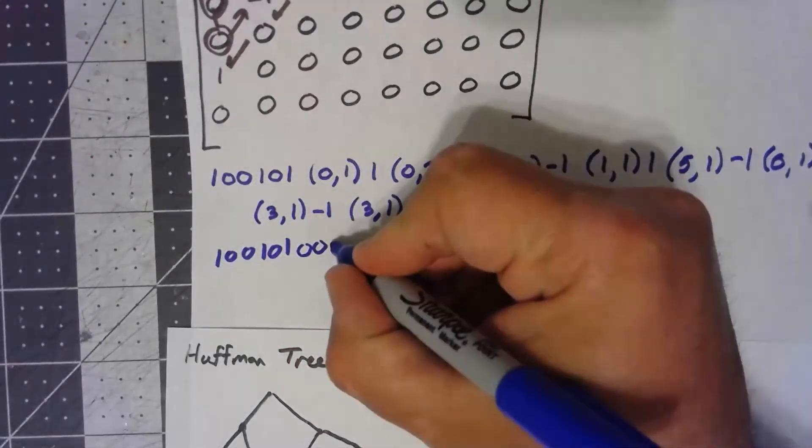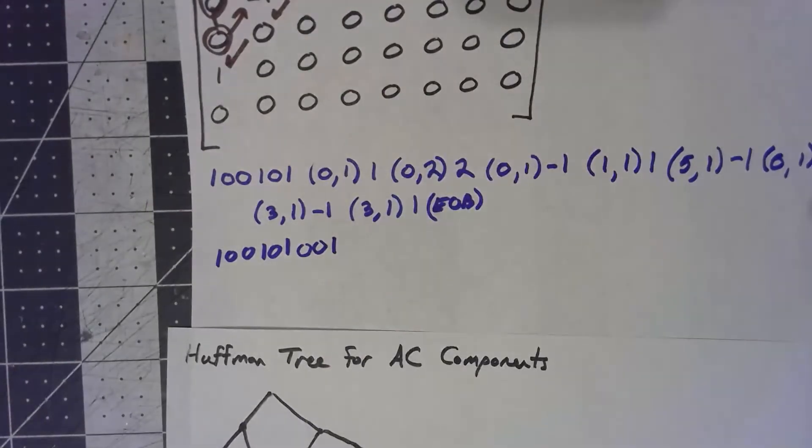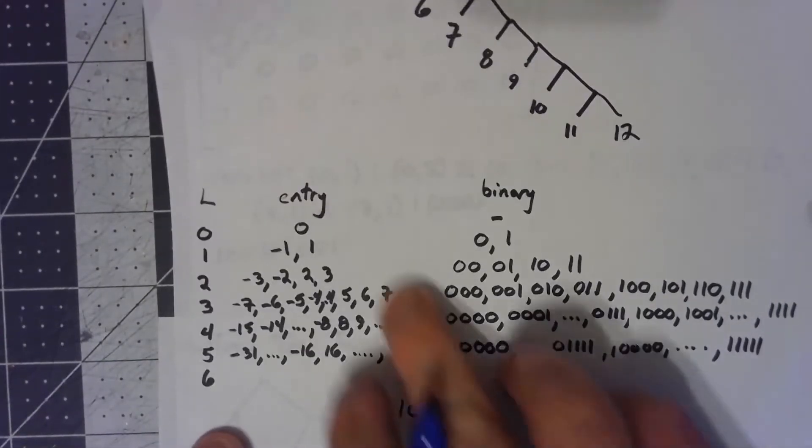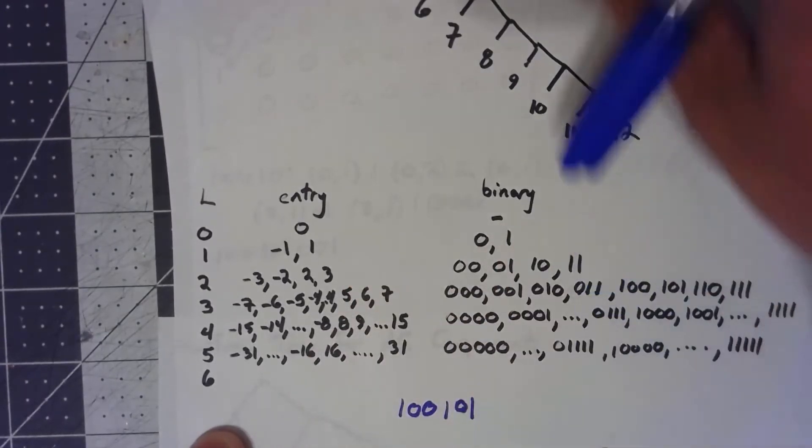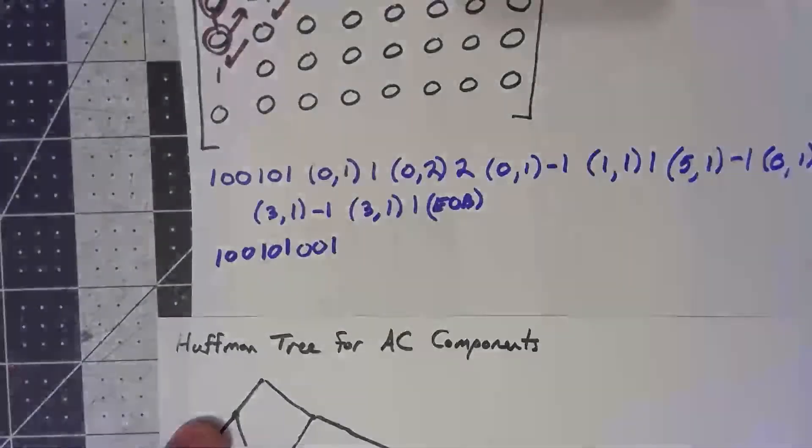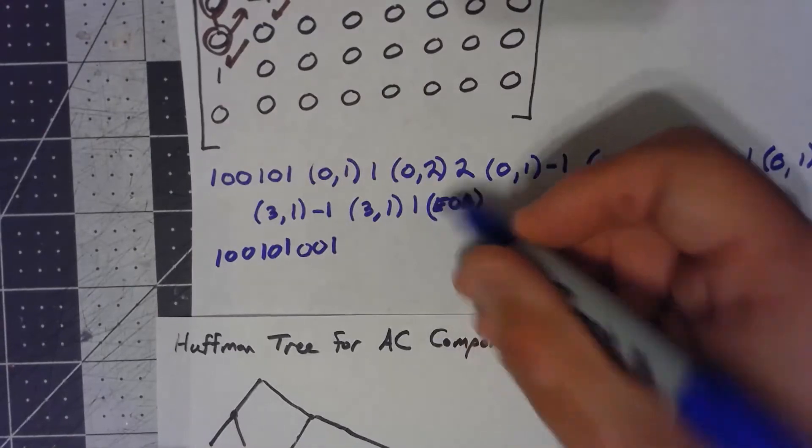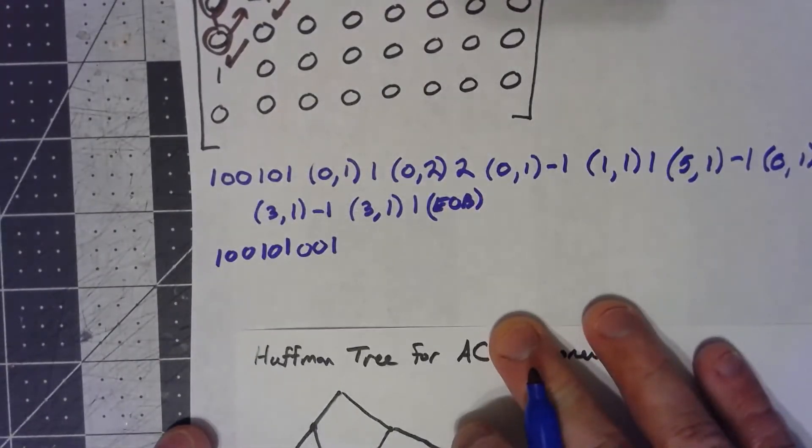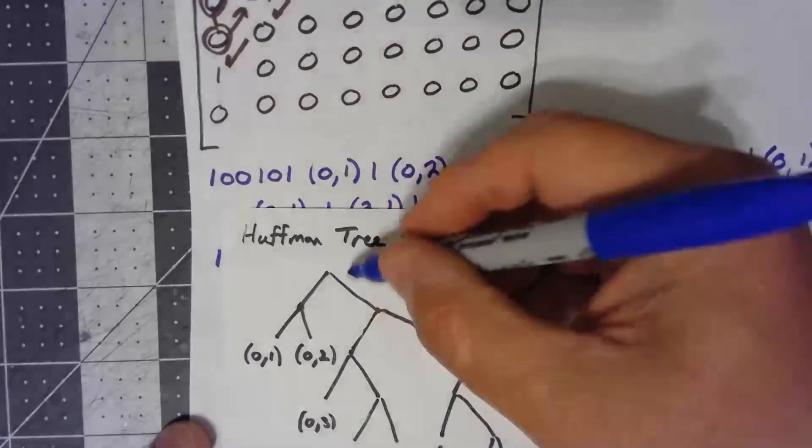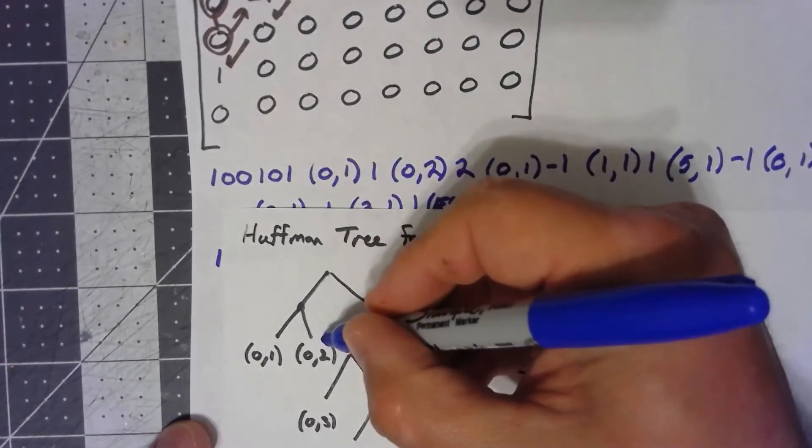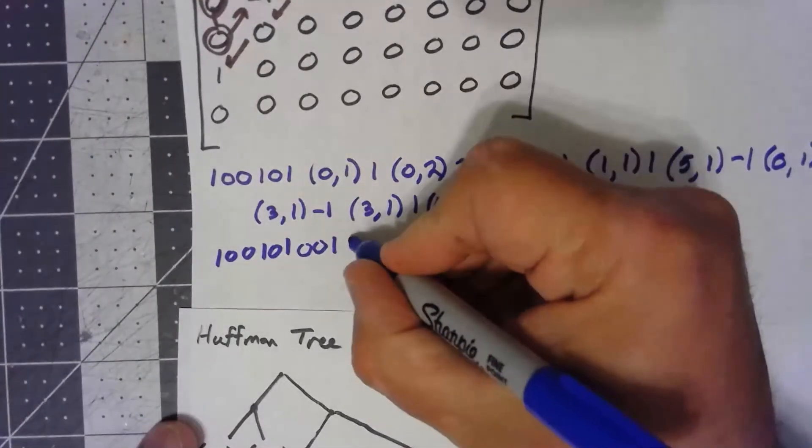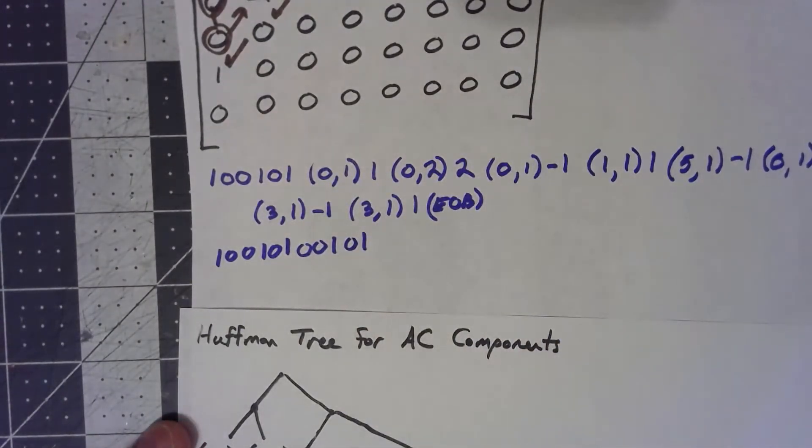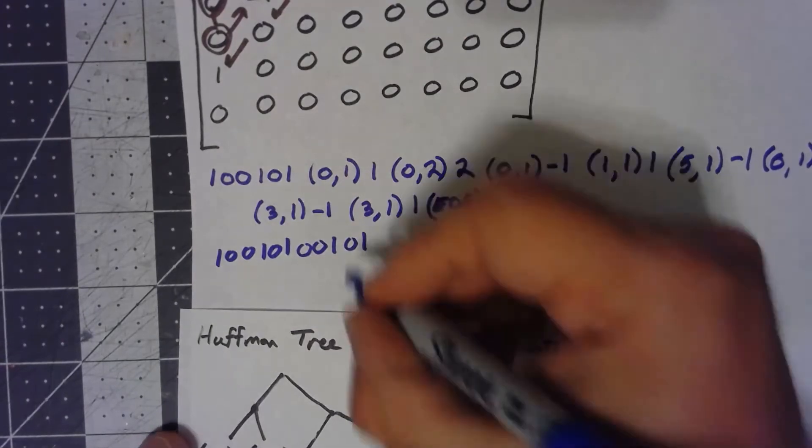To code a one, I'm not going to pull this out every time, but to code a one was a binary one, since it knows it has only one bit. Zero, two needs to be encoded next. Zero, two is a zero, one to get there. And then a two is a one, zero.